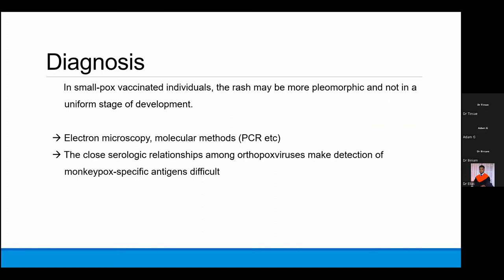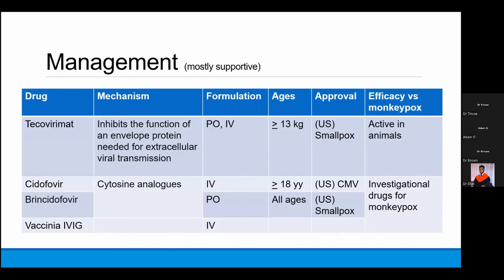Management is mostly supportive, but there are experimental antivirals being studied and trialed in a few patients. One is tecovirimat, which inhibits the function of an envelope protein needed for extracellular viral transmission. It is available in oral and intravenous routes, approved for children weighing more than 13 kg and adults. In the US it is approved for treating smallpox, but efficacy against monkeypox was only demonstrated in animals. New investigational drugs include cidofovir — a well-known antiviral for CMV — and its oral analogue brincidofovir, as well as vaccinia IVIG.